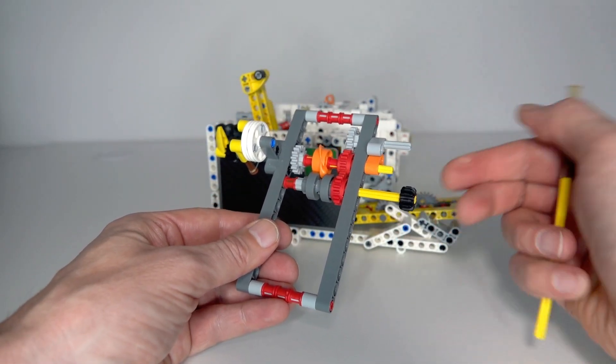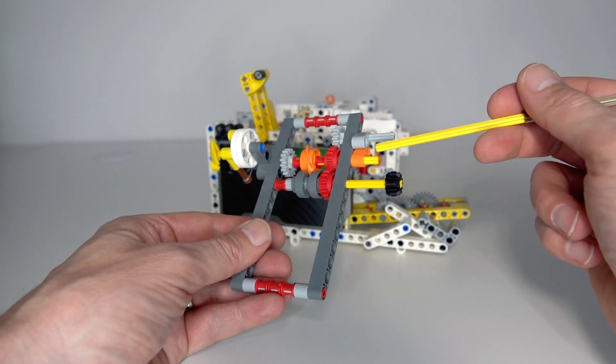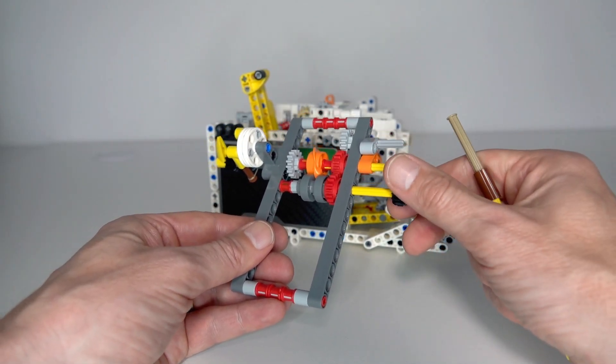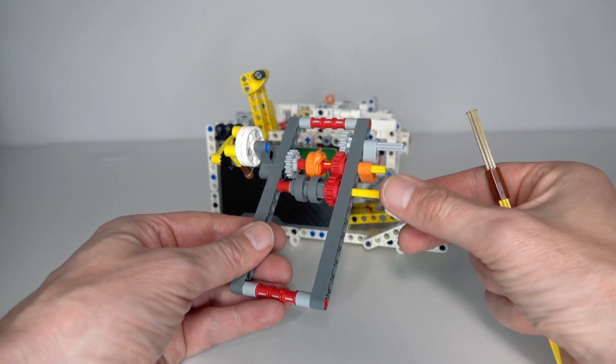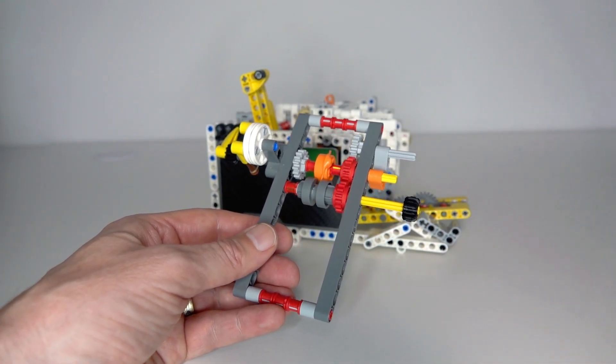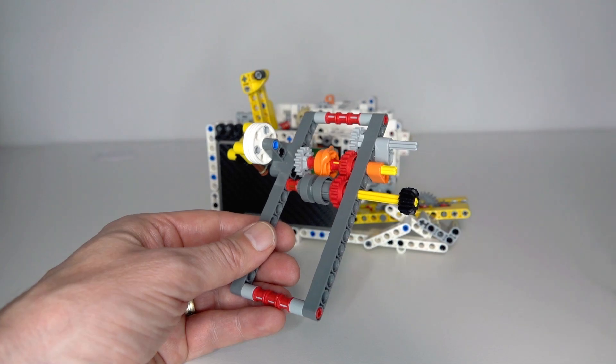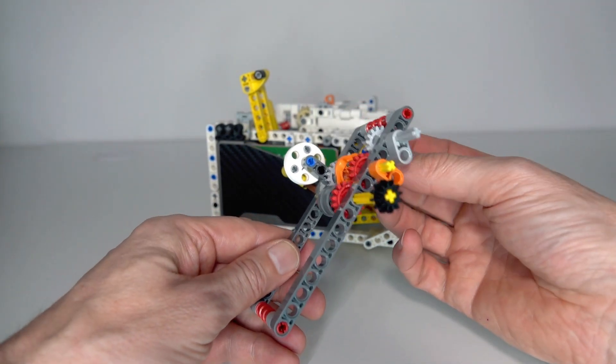But when I actually built the phantom opener I ended up with this issue where, because the orange rotary catch was being driven by four of these depending on which state it was in, I needed to have one for each state to be switched to the next state. What ended up happening is there was quite a bit of friction on that orange rotary catch.